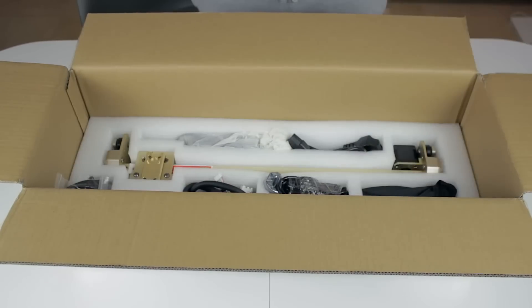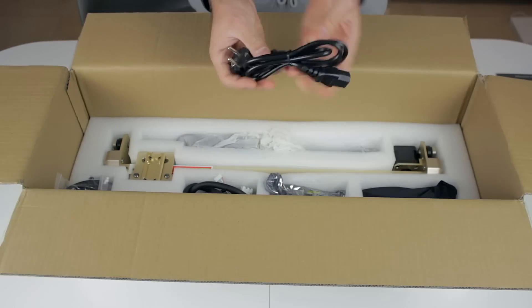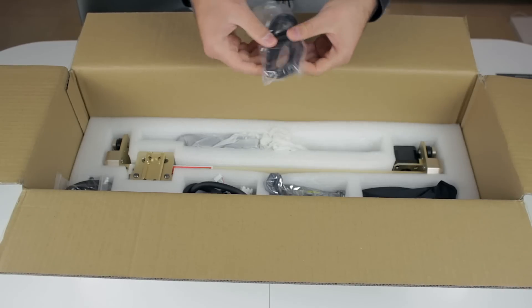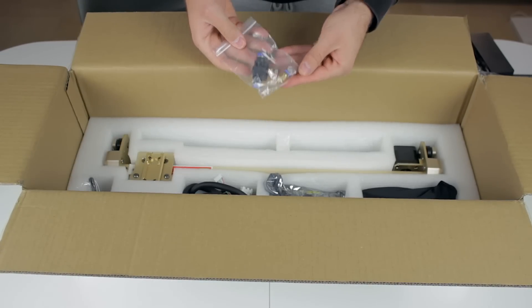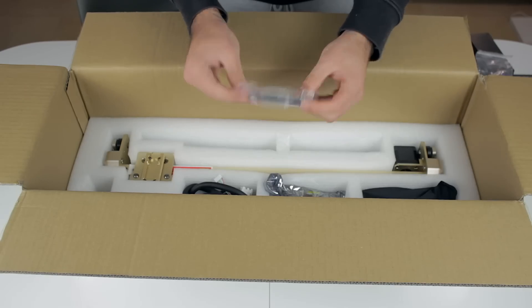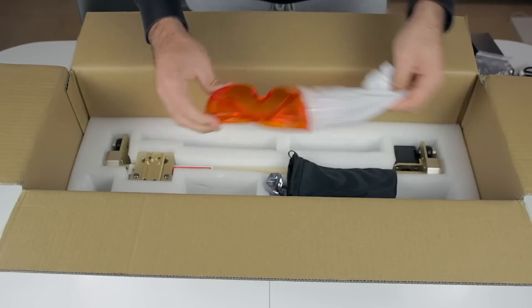Underneath this layer of foam, we keep finding more components. An air pipe, power cord, USB cord, the power supply, some GT2 timing belts, a valve for the air pipe, the wifi antenna, a lift cable, more cables, and a really cool pair of goggles.